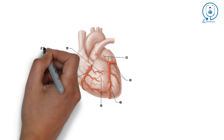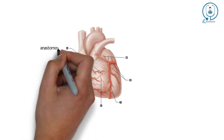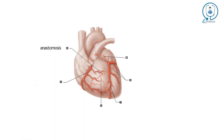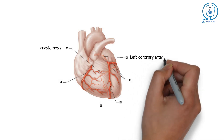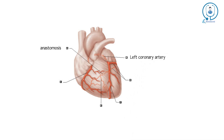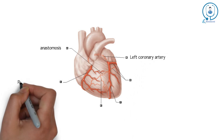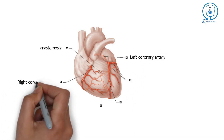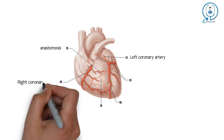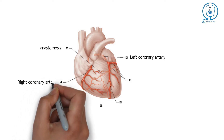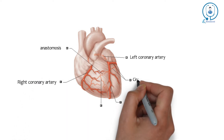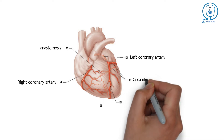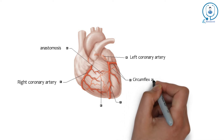Look over here — B. This is the left coronary artery. At the right side, we have the right coronary artery labeled with C. Name the structure labeled with D. At the left side, here we have the left circumflex artery.